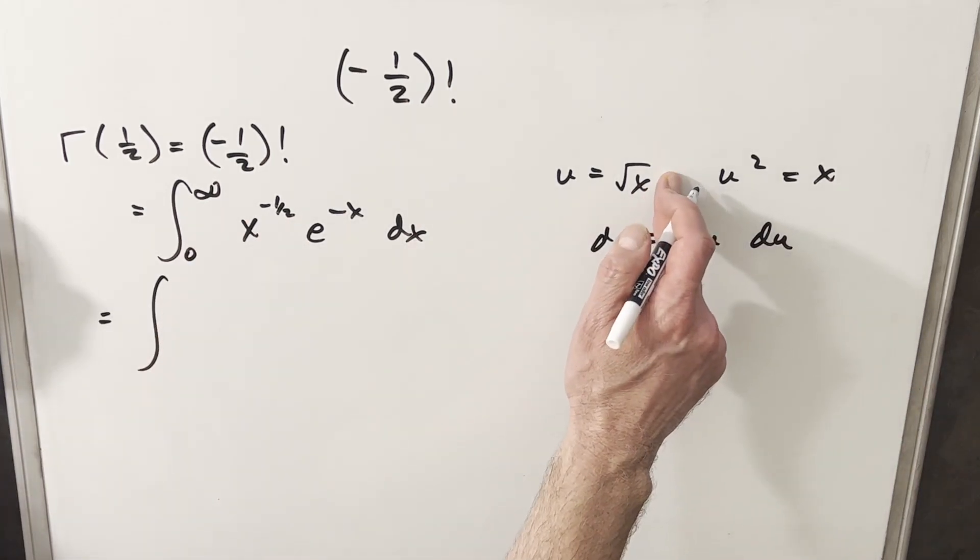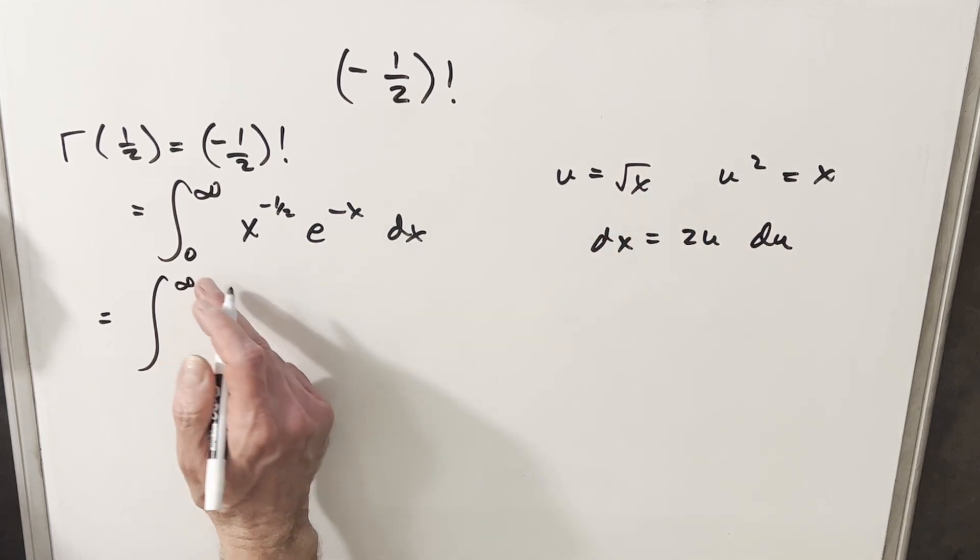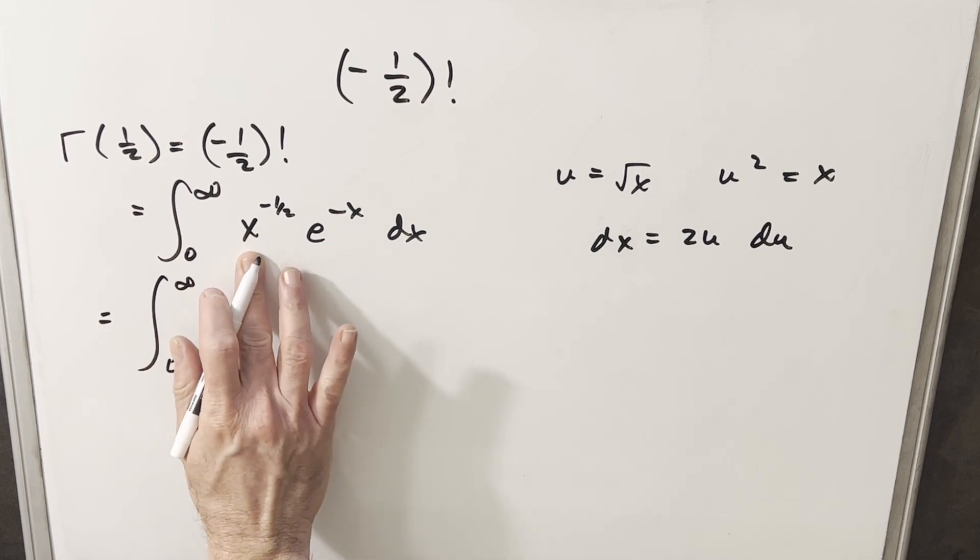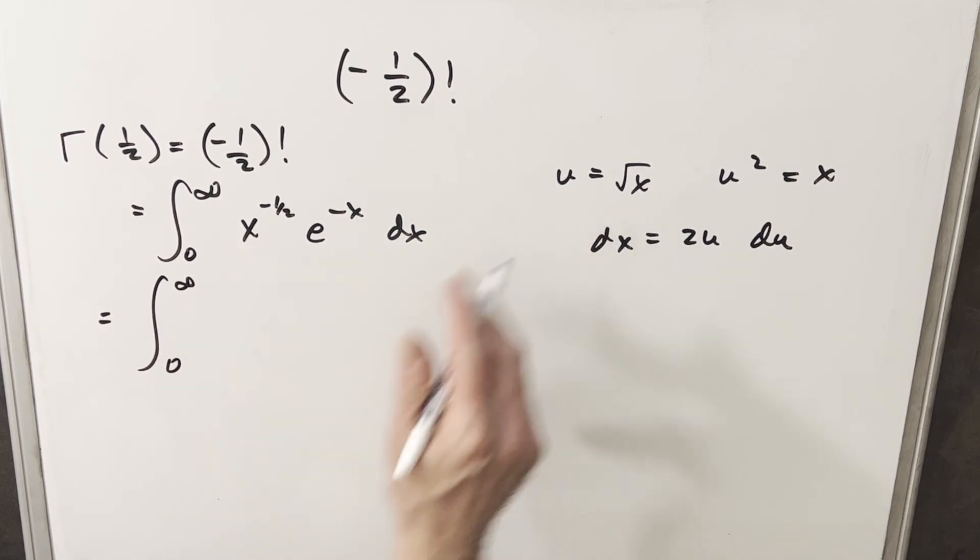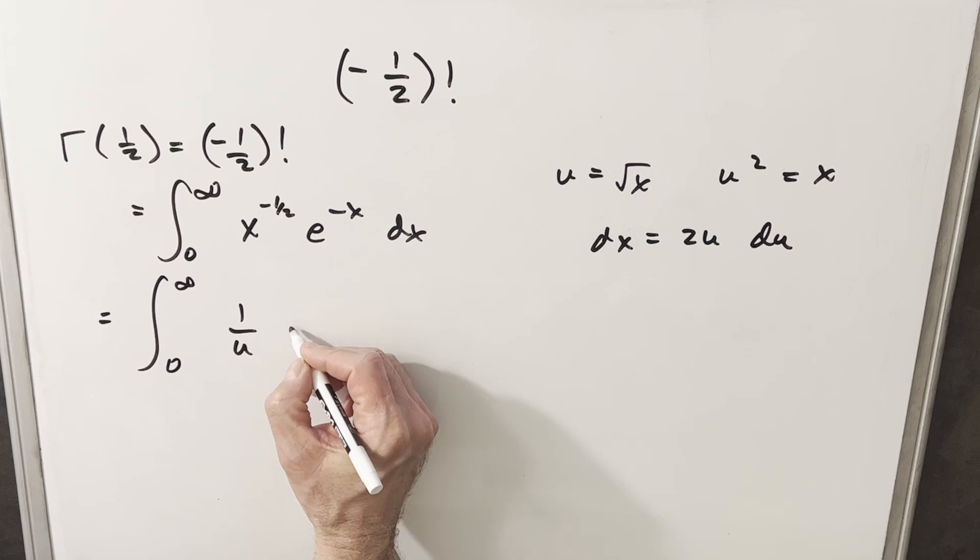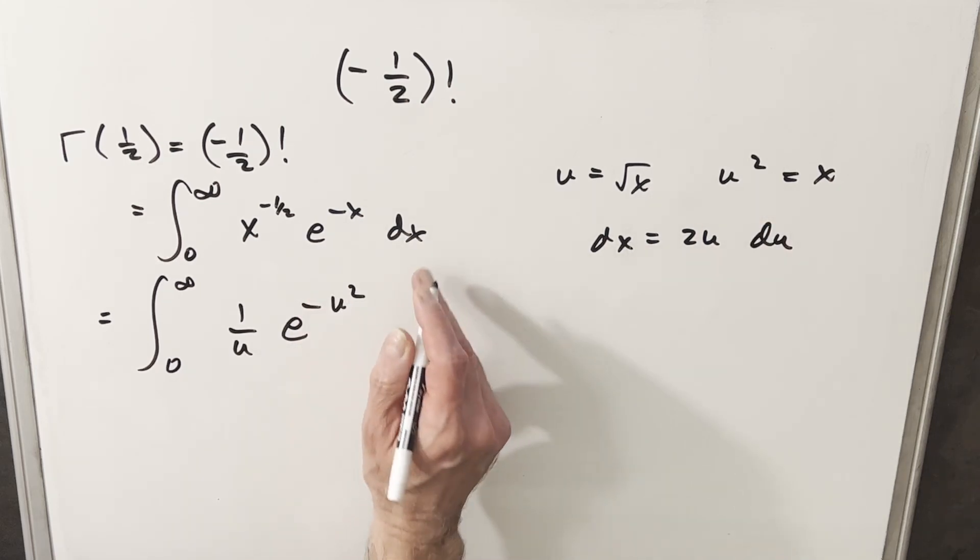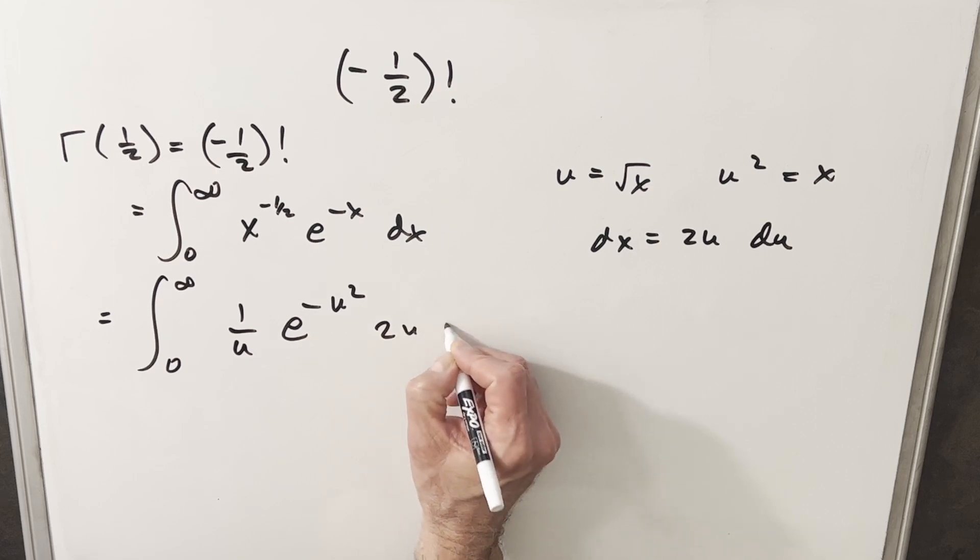Then we'll make this substitution. We'll plug an infinity in here. Square root of infinity is infinity. Plug a zero in, get back zero. Again, this is the same thing as one over the square root of x. So we can write that piece as one over u. Okay, we're going to have e, x is u squared. So we're going to have e minus u squared. dx is this thing, 2u du.